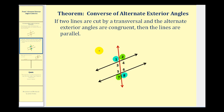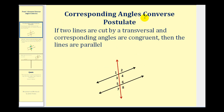We want to prove this theorem. The proof is based upon the corresponding angles converse postulate, which states that if two lines are cut by a transversal and corresponding angles are congruent, then the lines are parallel. Remember, a postulate does not have to be proved — it's assumed to be true.